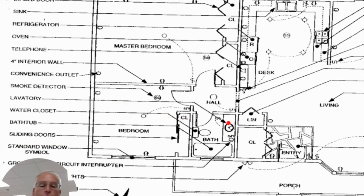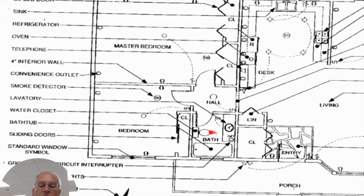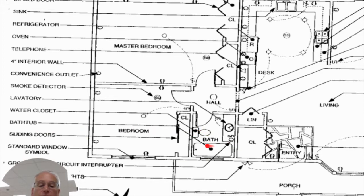Lavatory — fancy word for a sink. So in the bathroom, this would be the lavatory or sink in the bathroom. Water closet — fancy name for a toilet; whatever you want to call it, keep it appropriate for school — it's a toilet, and it looks like a toilet. Bathtub — looks like a bathtub, that's the symbol in the bathroom.